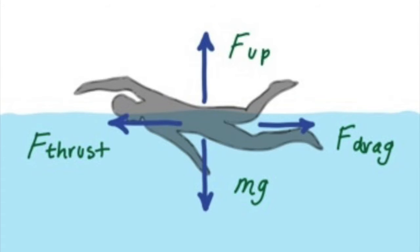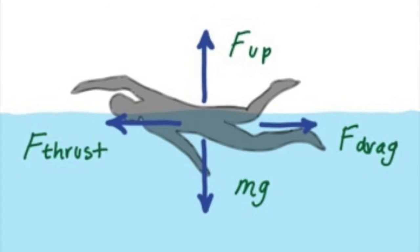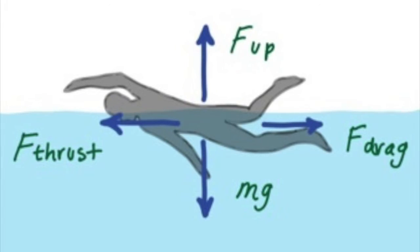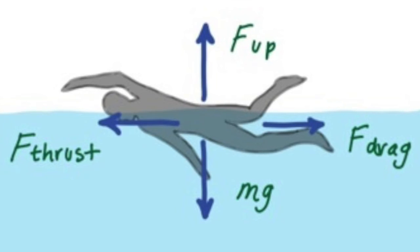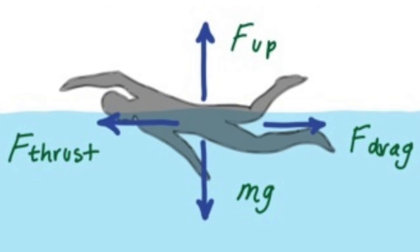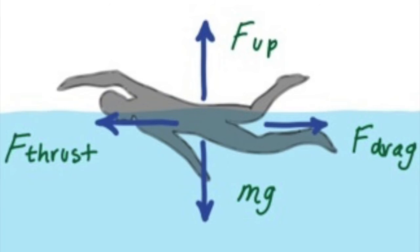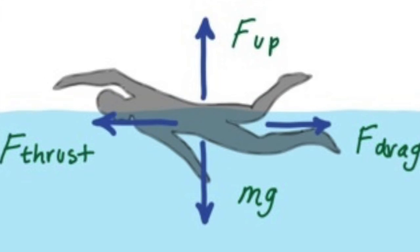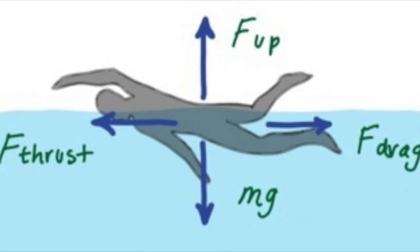As you float, your weight presses down into the water and the water presses back up, pushing you. When in the water, your body displaces the volume of the water causing you to float. This happens by way of a buoyancy force that lifts the object. The principle behind the lift is called Archimedes' principle, which states that an object, regardless of its shape, that is suspended in a fluid is acted upon by an upward buoyant force equal to the weight of the fluid that is displaced by the object.